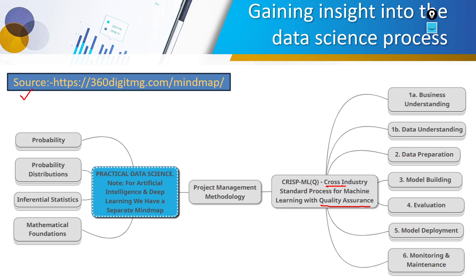Today we will try to cover the first three parts: business understanding, data understanding, and data preparation, and model building. To deal with business understanding, we require a team of data scientists — a group of six to eight people — out of which some people are acting as domain experts. These domain experts play a very important role in business understanding.